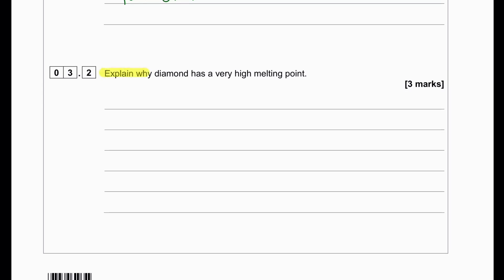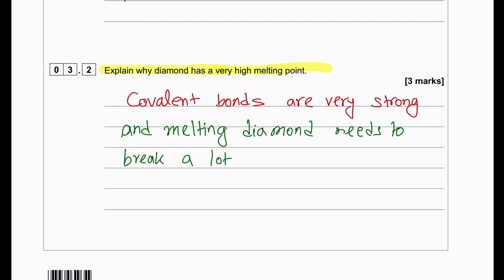Explain why diamond has a very high melting point. Covalent bonds are very strong and since diamond has many covalent bonds, when melting it we need to break a lot of covalent bonds. A lot of energy is required to break those bonds.